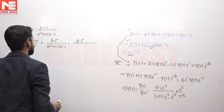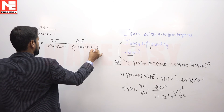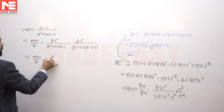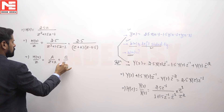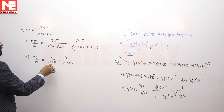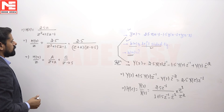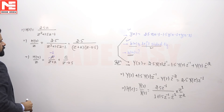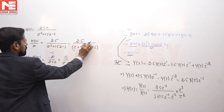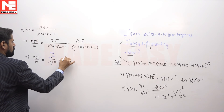Factorizing the denominator gives factors (z + 2) and (z − 0.5). Therefore, H(z)/z = A/(z + 2) + B/(z − 0.5). The residue at z = −2 is equal to −1, and the residue at z = 0.5 is equal to 1.